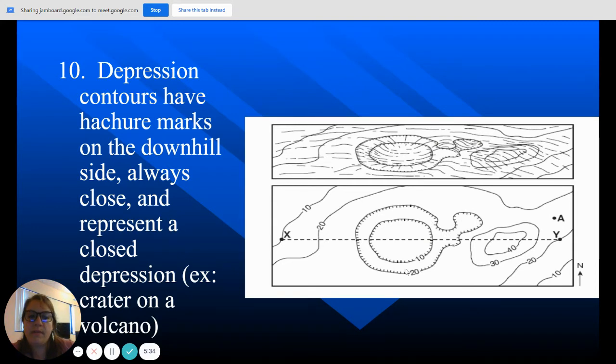So this could be, this is probably at the top of a volcano here, not a crater because craters wouldn't have the depression marks over here. It would just be one circle. So to show when it goes up and back down, that's a depression that's going to be represented by these hachure marks.